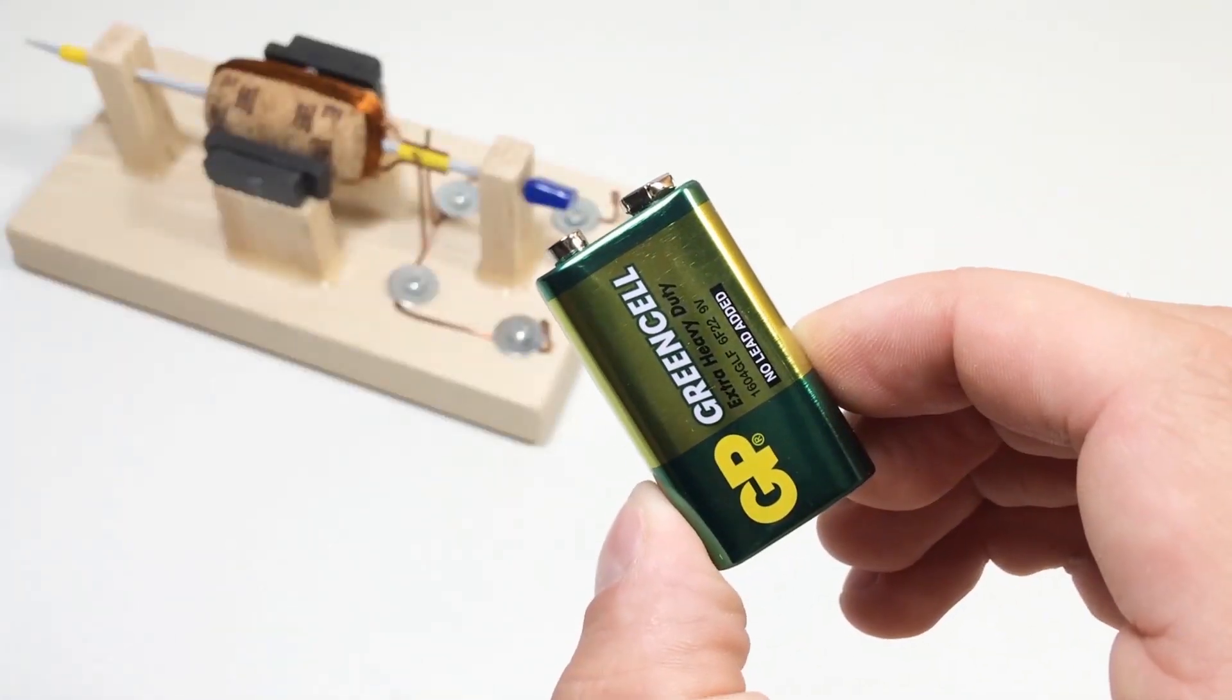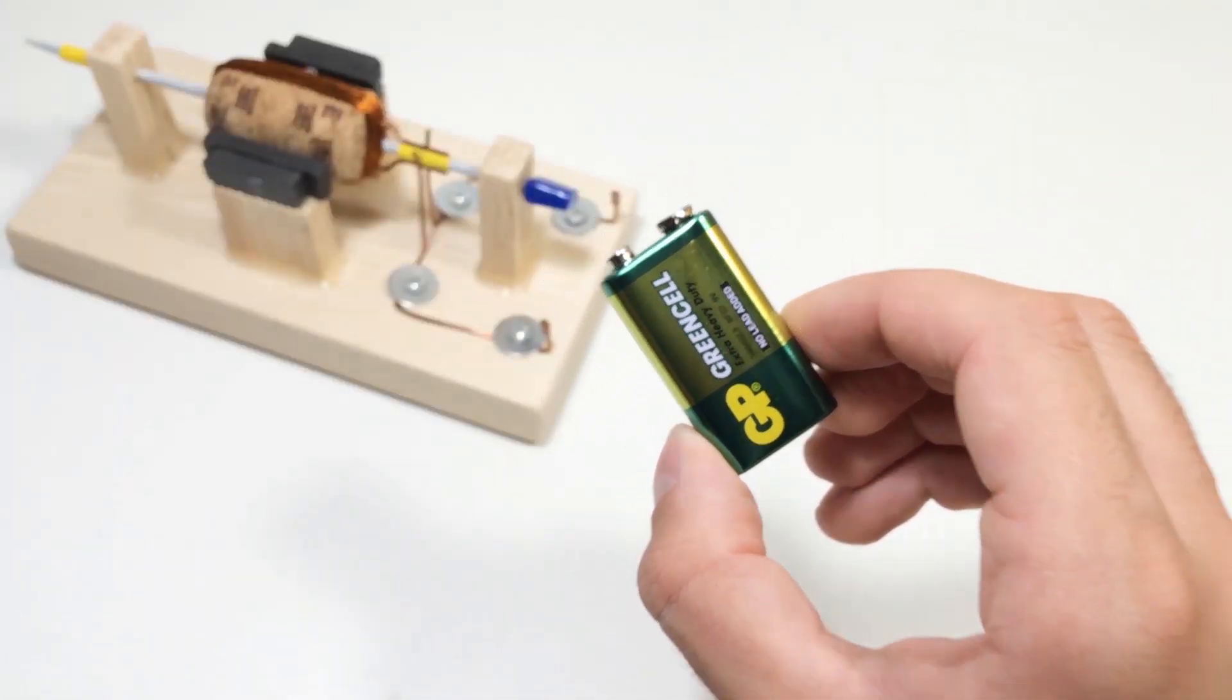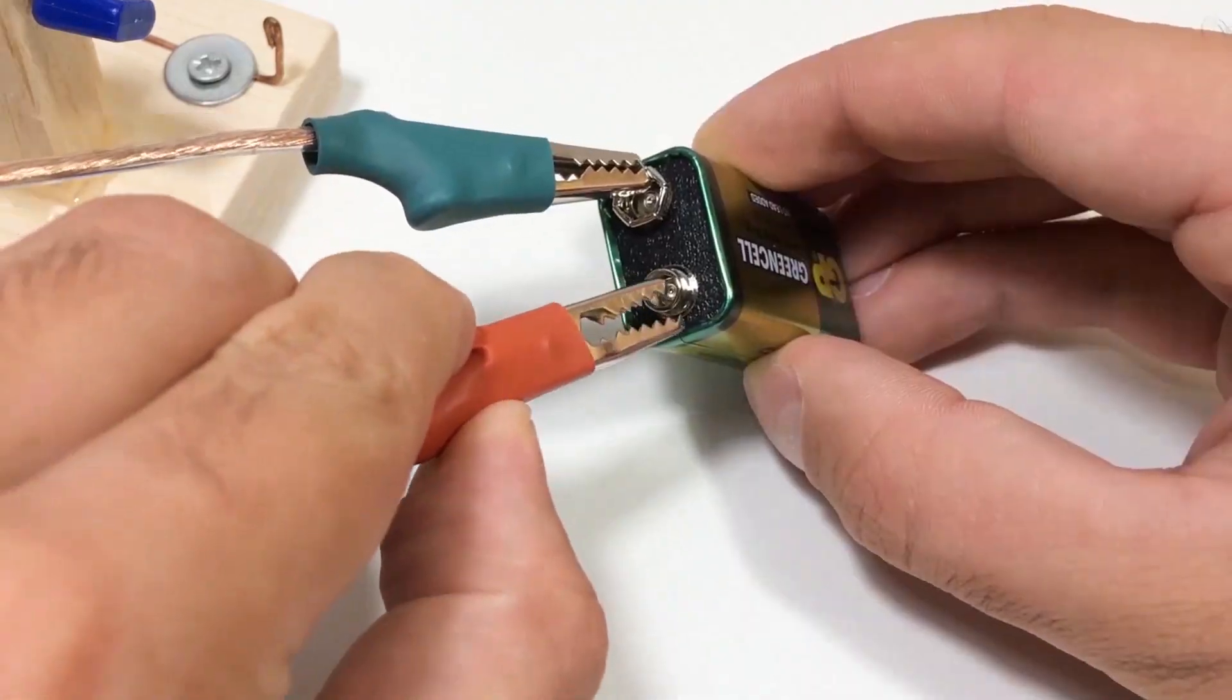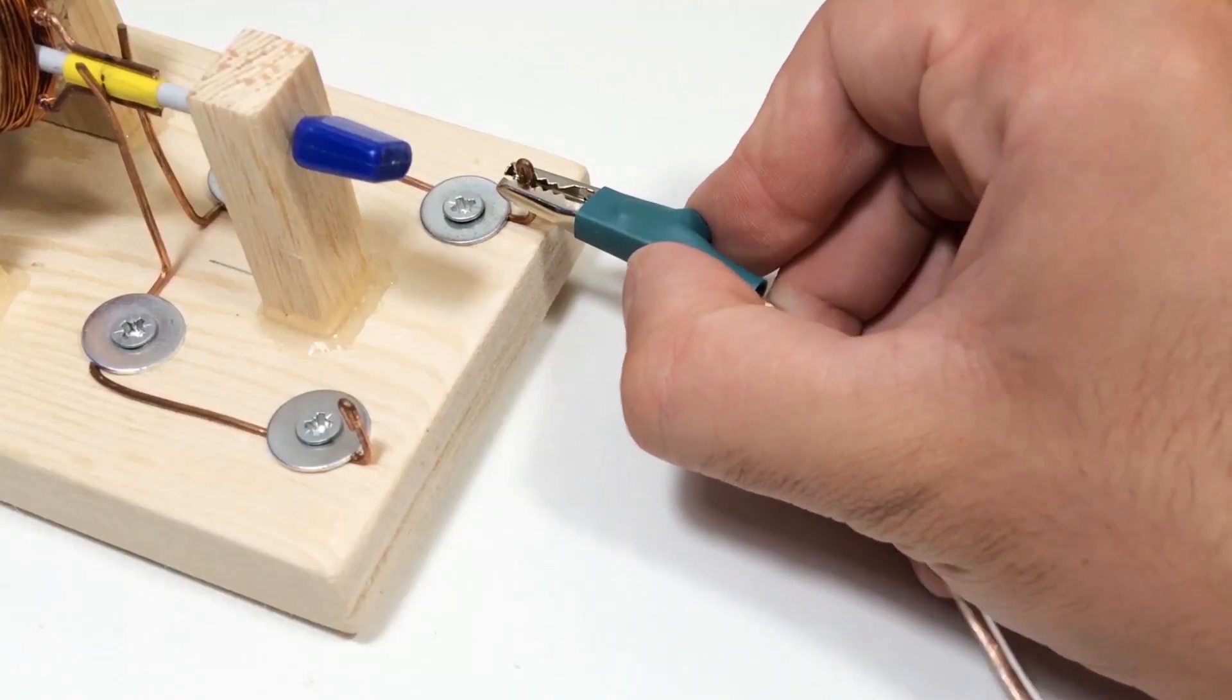When electricity flows through the coil, it creates a magnetic field. That field interacts with permanent magnets, making the coil spin.